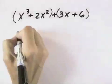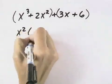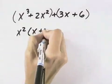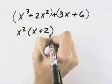In the first two, I have a greatest common factor of x squared. If I divide that out, I'm left with x plus 2 when I divide each of these terms by x squared.